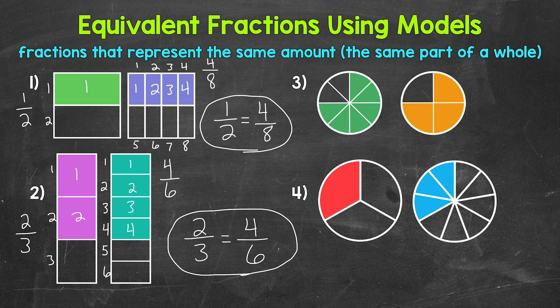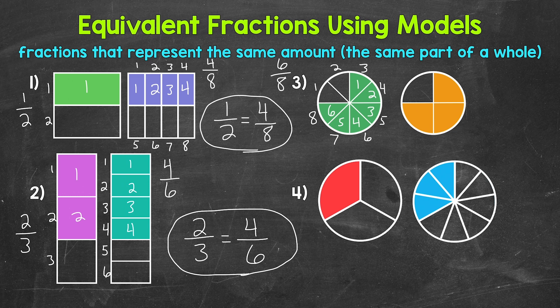Next, let's move on to number three, where we have two circles. The same amount of each circle has been shaded in, so we're going to have equivalent fractions here. Let's write those out. The circle on the left has been divided into eight equal parts, so eight is our denominator. Six parts have been shaded in, so six is our numerator. That circle is representing six eighths.